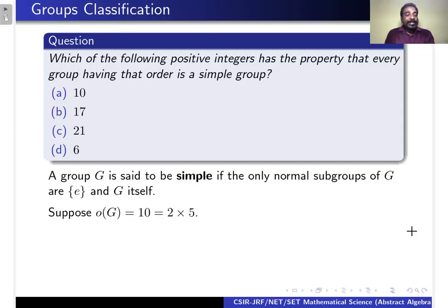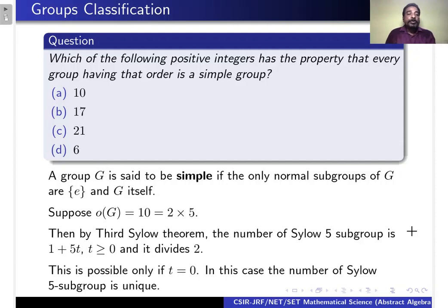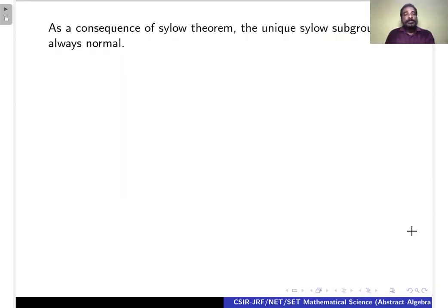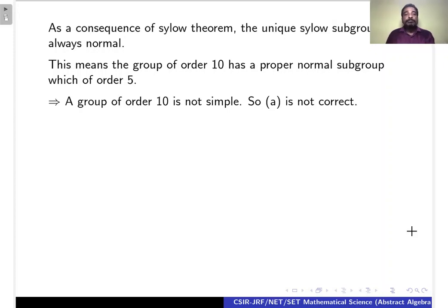When the order of G is equal to 10, we can write 10 as 2 × 5. By the third Sylow theorem, the number of Sylow 5-subgroups is 1 + 5t, where t ≥ 0 and it divides 2. This is possible only if t = 0, so the Sylow 5-subgroup is unique. The unique Sylow subgroup is always normal. Therefore, the group of order 10 has a proper normal subgroup of order 5, meaning any group of order 10 is not simple. Therefore, option A is not correct.